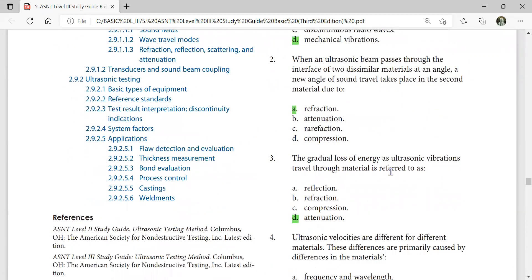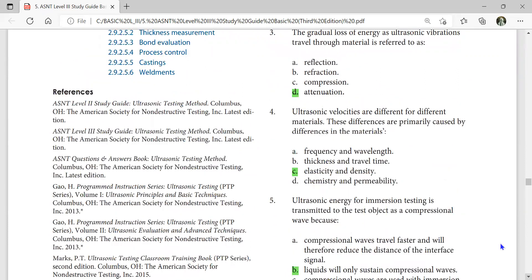The gradual loss of energy as ultrasonic vibrations travel through material is referred to as attenuation. Ultrasonic velocities are different for different materials. The differences are primarily caused by differences in material elasticity and material density.